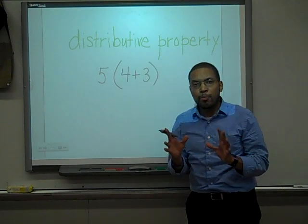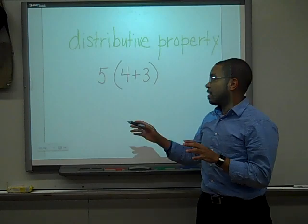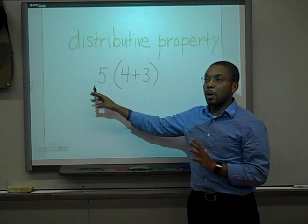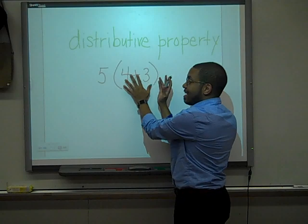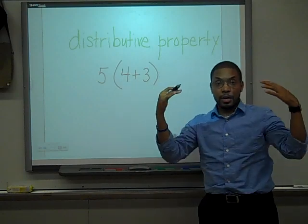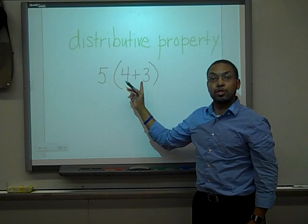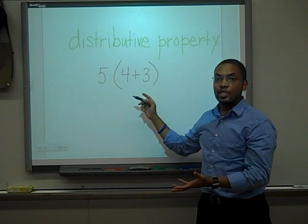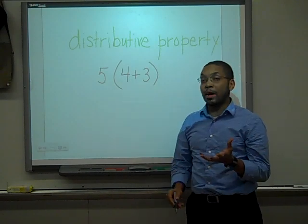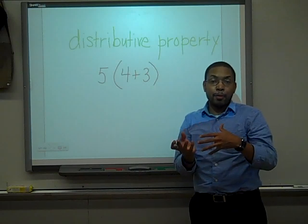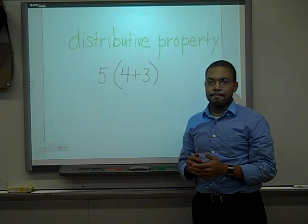The distributive property says that any term multiplied by the terms on the inside of the parentheses in a group will be multiplied by each of those terms over addition. And a term by the way is a number that is separated by an addition or a subtraction sign.